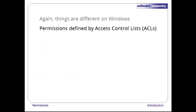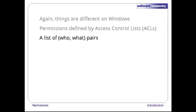There, permissions are defined by access control lists, or ACLs. An ACL is a list of pairs, each of which combines a 'who' with a 'what'. For example, you could give the mummy permission to append data to a file without giving him permission to read or delete it, and give Frankenstein permission to delete a file without being able to see what it contains.